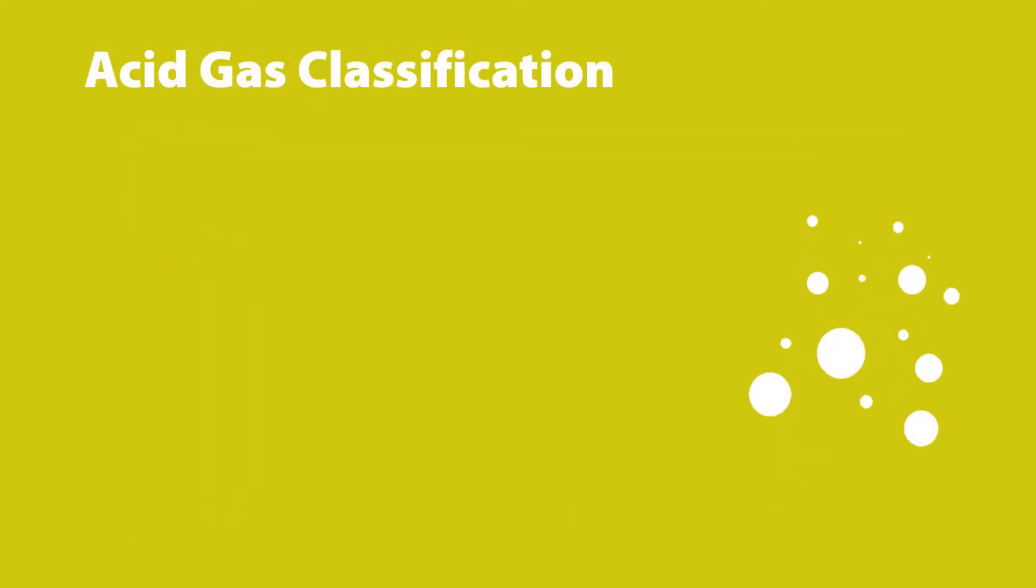The classification A1 is less than 2.5 microsiemens per millimeter and a pH value of no less than 4.3.